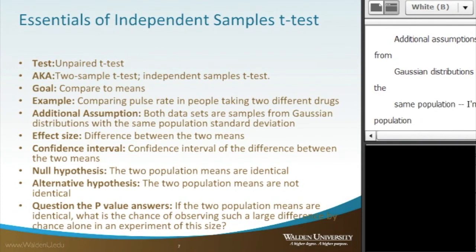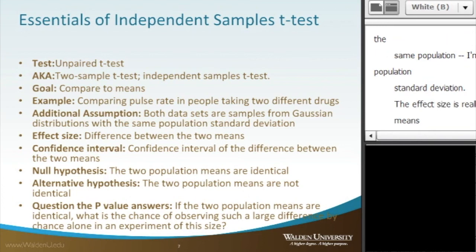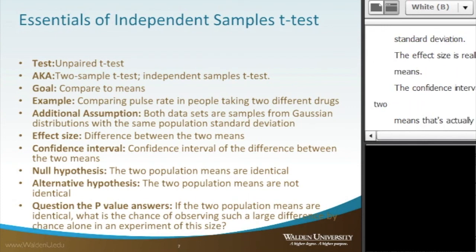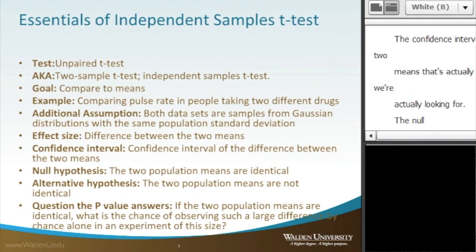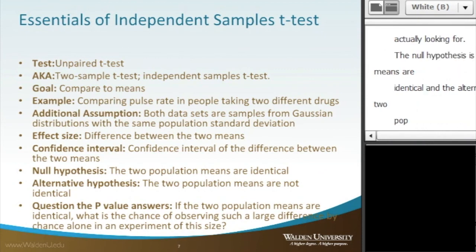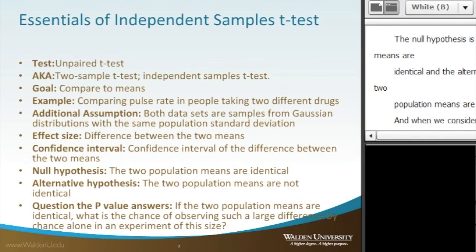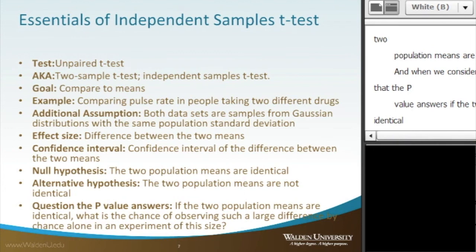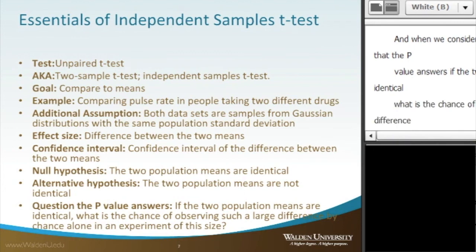The effect size is really the difference between two means. The confidence interval of the difference between two means is the confidence interval we're looking for. The null hypothesis is that the two population means are identical, and the alternative hypothesis is that the two population means are not identical.